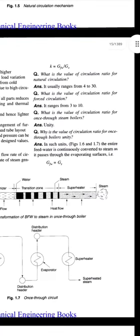What is the value of circulation ratio for natural circulation? It usually ranges from 4 to 30. What is the value of circulation ratio for forced circulation? It is 3 to 10. What is the value of circulation ratio for once-through steam boilers? It is unity.